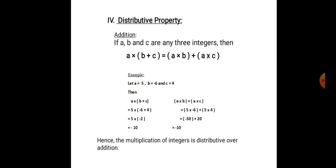Now, let us move on to a very important property: distributive property. Under addition, if a, b and c are any three integers, then a into (b plus c) is equal to a into b plus a into c. Here, a is the integer which is distributed to both b and c. Example: a is equal to 5, b is equal to minus 6 and c is equal to 4. a into (b plus c) is equal to 5 into (minus 6 plus 4). Minus 6 plus 4 is minus 2. 5 into minus 2 is minus 10.